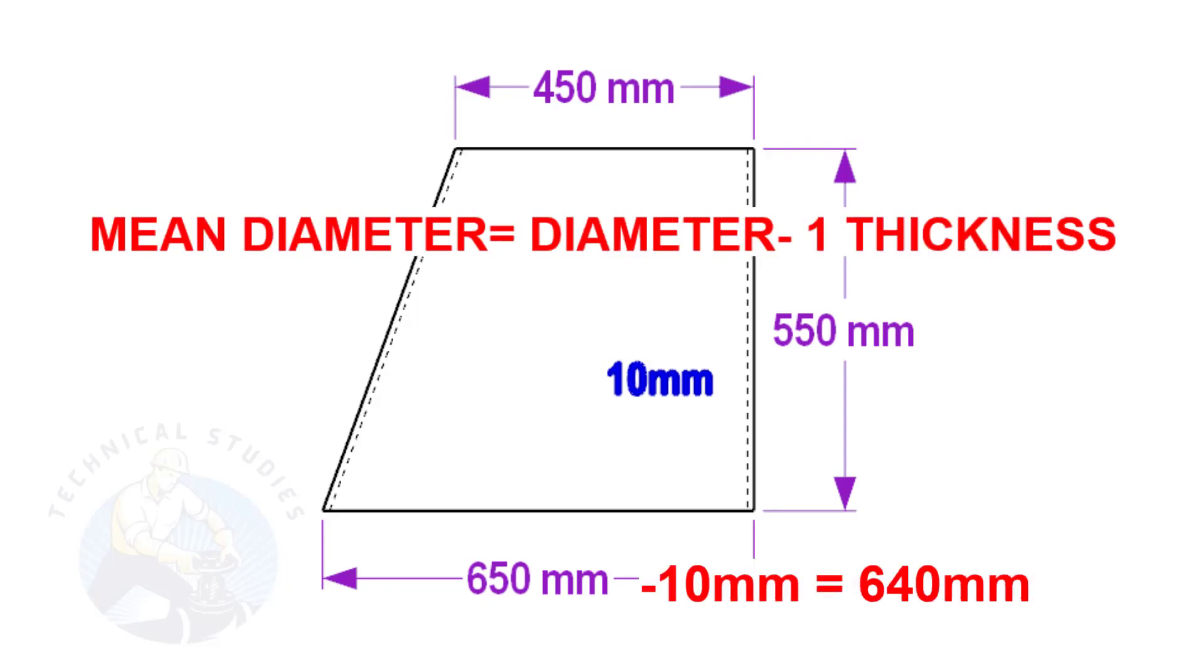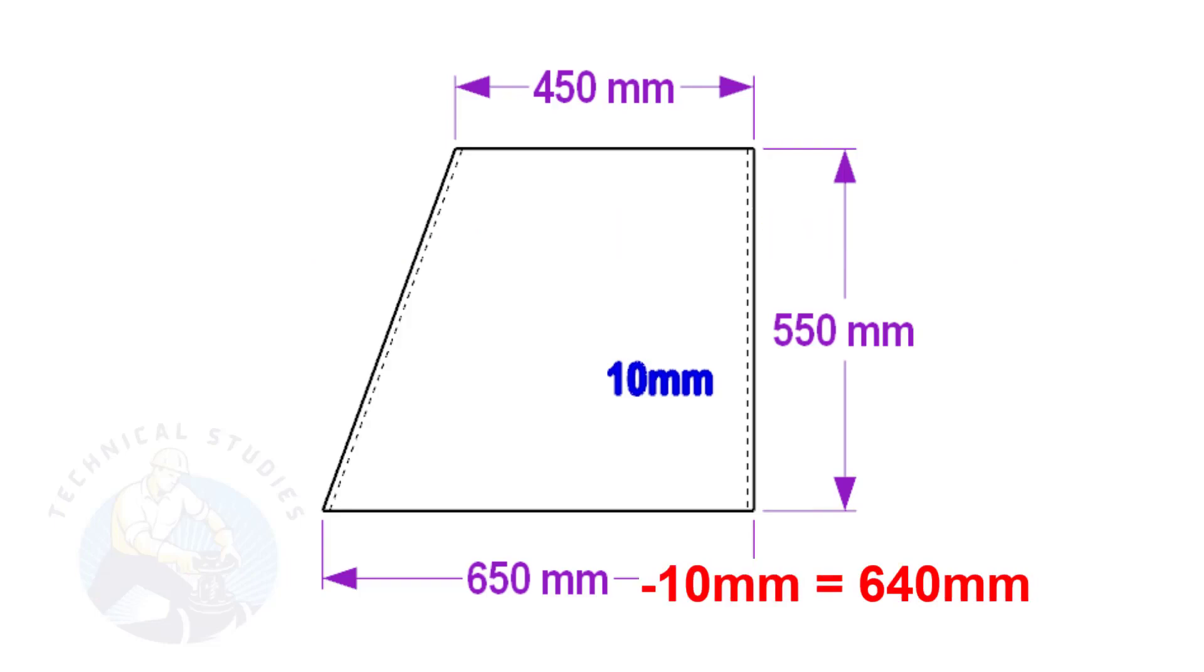Assume the base diameter of the cone is 650 mm and the thickness is 10 mm, the mean diameter is 650 minus 10 is equal to 640 mm. Similarly, deduct 10 mm from 450 to get the mean diameter of the top side.